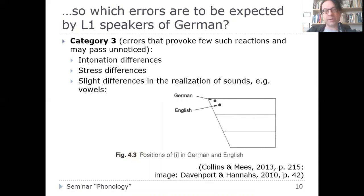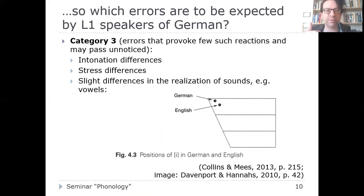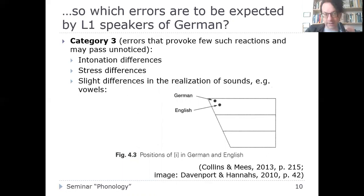Learners must be given the opportunity to practice crucial aspects of the English sound system — crucial from their own point of view, meaning the distinctions their L1 doesn't make but English does. There are hierarchies of errors: category one (very important), category two (slightly important), and category three (not so important).